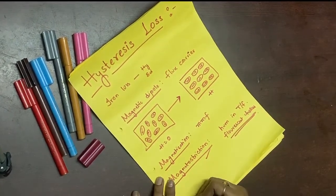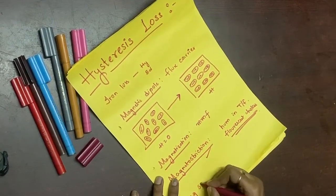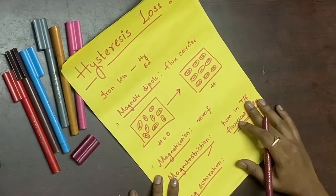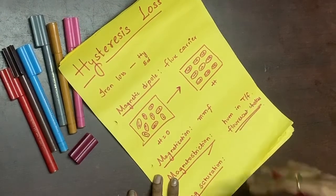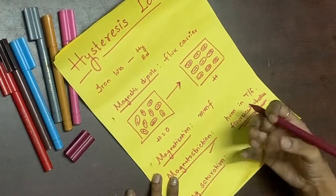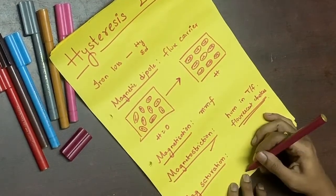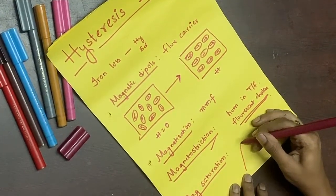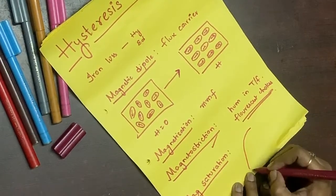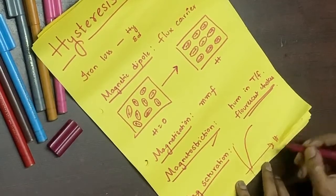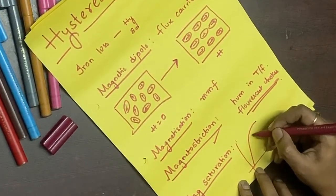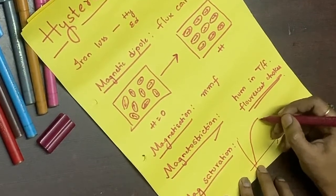The next concept is magnetic saturation. When there are more domains available in the magnetic material, it magnetizes at a faster rate. When there are fewer domains, it magnetizes at a slower rate. In the beginning, if I apply a field, the magnetization increases rapidly, and as the domains become fewer, the rate decreases and it starts to saturate.